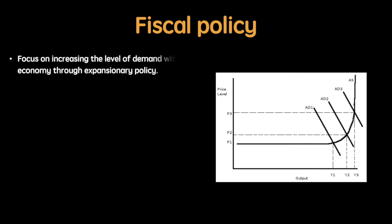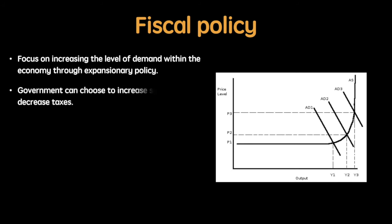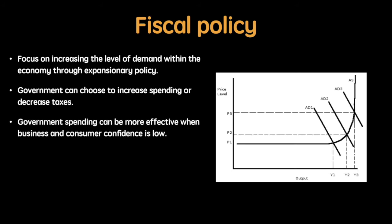Reflationary fiscal policy focuses on increasing the level of demand within the economy through expansionary policy. The government can choose to increase spending or decrease taxes. Tax reduction can be effective at increasing business and consumer spending, but government spending can be more effective than tax cuts when business and consumer confidence is low.